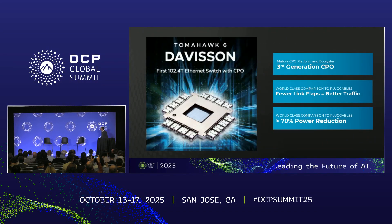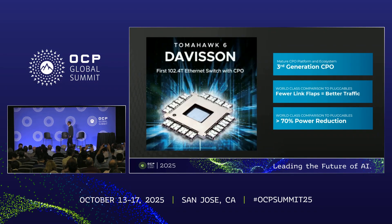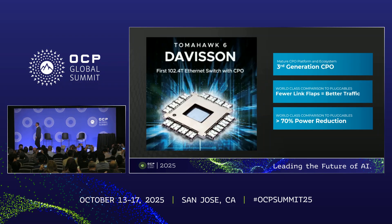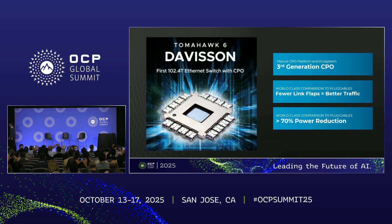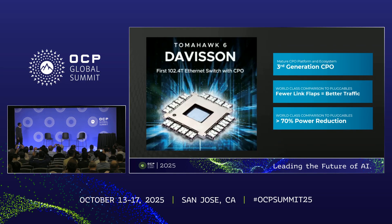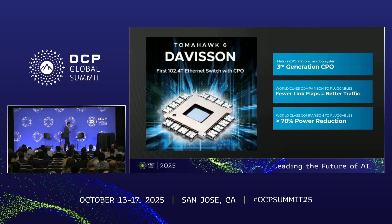And then Davison — the third generation — fewer link flaps, better traffic, lower power. It's 102T, with Tomahawk 6 in the middle, and 16 × 6.4T Davison engines around it, utilizing all 512 radix from that switch.